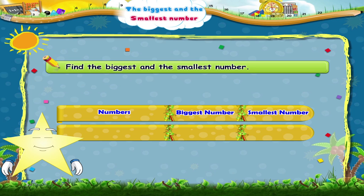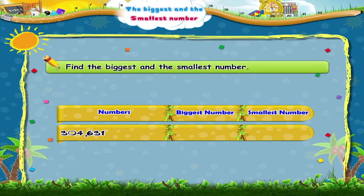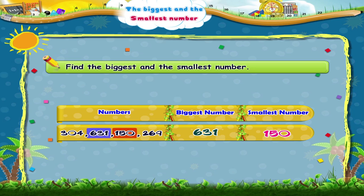Now, which of the numbers 304, 631, 150 and 269 is the biggest and smallest? 631 is the biggest number and 150 is the smallest number.